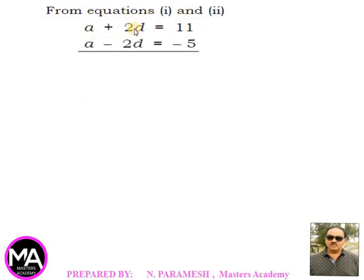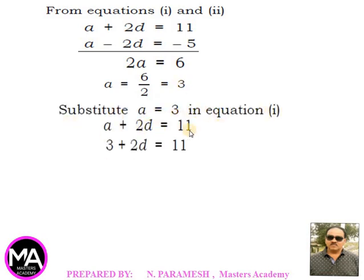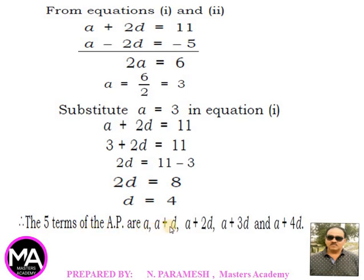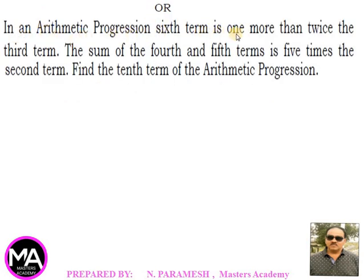From equations 1 and 2: a+2d=11 and a-2d=-5. Adding them, 2a = 6, so a = 3. Substituting a=3 into equation 1: 3 + 2d = 11, so 2d = 8, d = 4. Therefore the five terms are 3, 7, 11, 15, and 19.